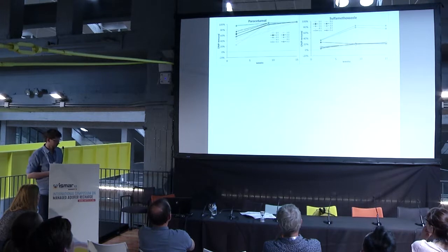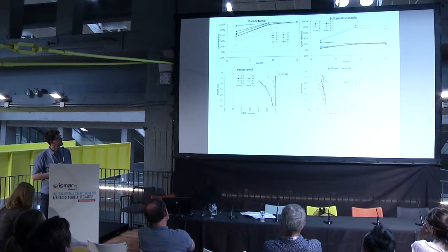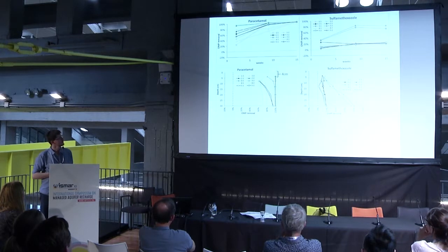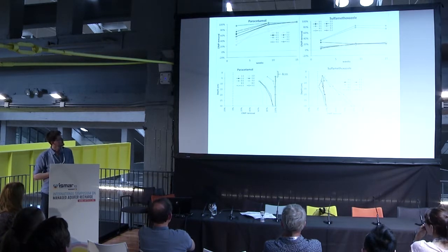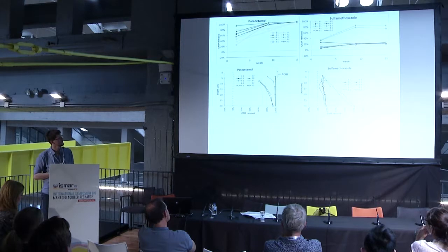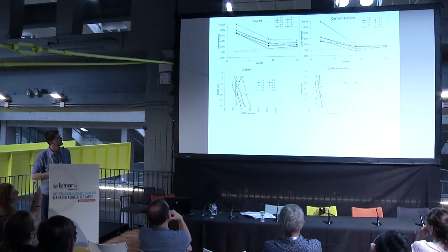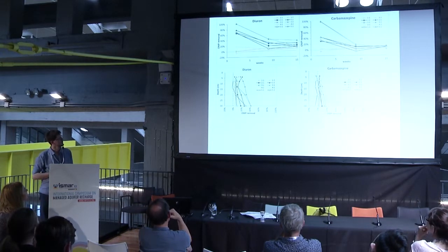Now some depth profiles from the side port results. This is an example from the middle of the experiment, week nine, with depth on one axis and removal on the other. In short, paracetamol is basically removed in the aerobic zone in the top few centimeters, and then not much is happening below. All inoculated barriers — sand included — show complete removal right away. Sulfamethoxazole, in contrast, shows removal in the anaerobic zone. Anaerobic conditions are sufficient to remove sulfamethoxazole to a large extent, at least in the case of the 50% compost barrier. For the two recalcitrant compounds: carbamazepine shows nothing really happening, and diuron is a bit similar to sulfamethoxazole with some removal in the anaerobic zone.